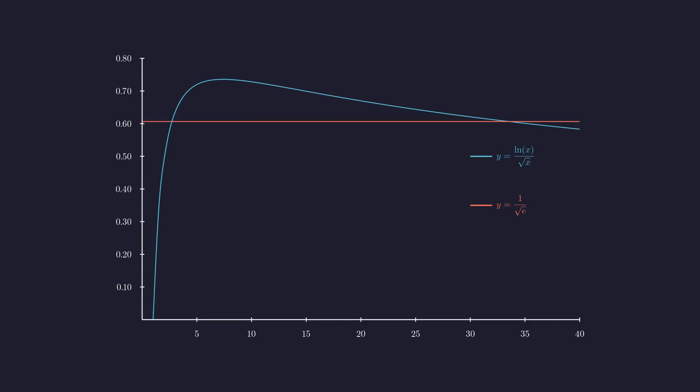Now let's visualize this result. We plot the function and the constant line on the same axis. The blue curve is our function, and the red line is our constant. The graph confirms our analysis perfectly. We see the maximum at x equals e squared, and the two intersection points: one at x equals e, and a second larger value around 33.5.